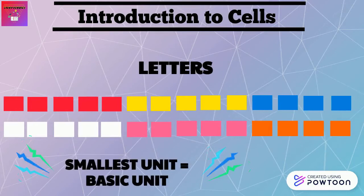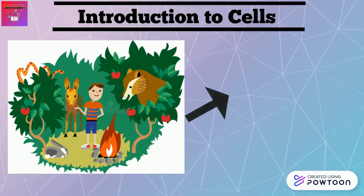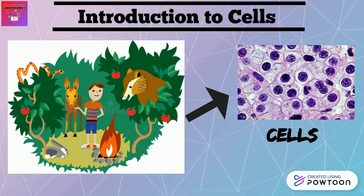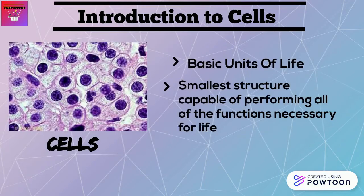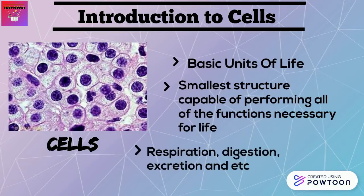These smaller units are called basic units. For this chapter, we are going to dive into a really important part of all living things — called cells. Every single organism, whether they are humans, animals, plants, or the tiniest microorganism that can't be seen with the naked eye, is made up of cells. Cells are the basic units of life and the smallest structure capable of performing all functions necessary for life. Any biochemical process — whether it is respiration, digestion, or excretion — is done by various cells scattered throughout our body.